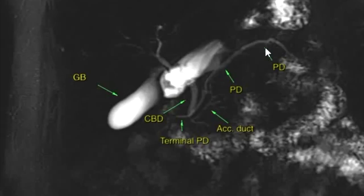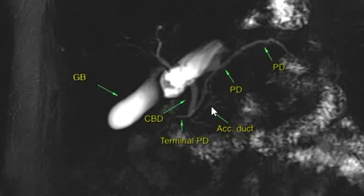Thick slab MRCP image shows the main pancreatic duct crossing the common bile duct and draining separately into the minor papilla, consistent with pancreas divisum. A linear hyperintense structure is seen inferior to the main pancreatic duct, possibly representing an accessory pancreatic duct, possibly communicating with the main pancreatic duct as well as the terminal CBD. These findings need to be confirmed on T2 coronal thin-slice images.